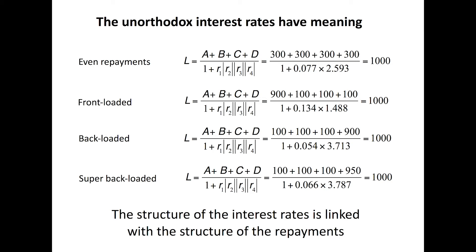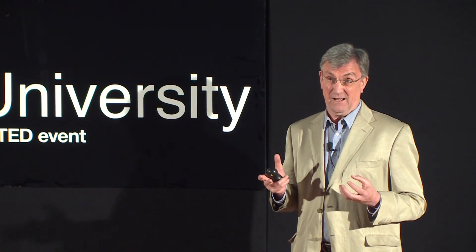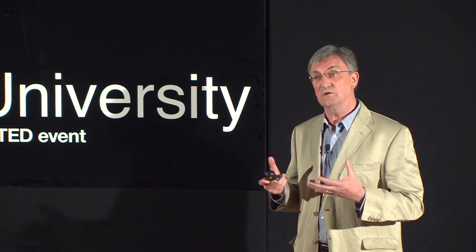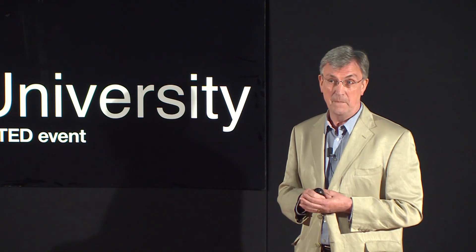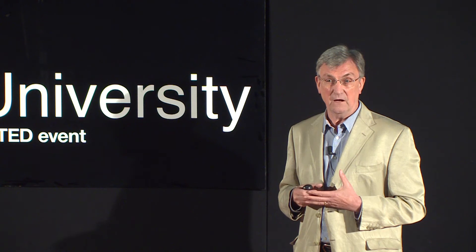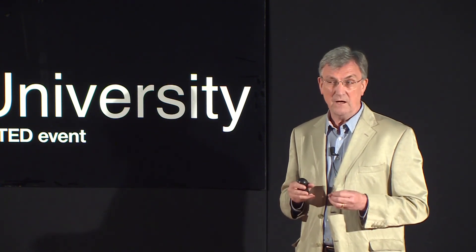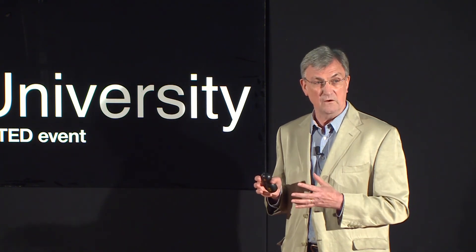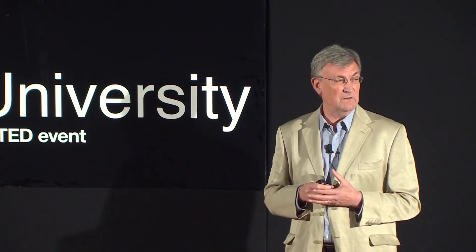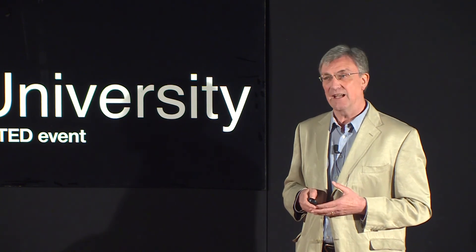Finally, consider a super backloaded loan. Compare the top line with the bottom line very carefully: going from even repayments to a super backloaded loan, the bank is actually taking more from you — there's an extra £50 in the final repayment. But look at what happens to the APR, the conventional one the law tells us to compare: it has actually gone down from 7.7% to 6.6%. So if you're a financial organisation forced by legislation to disclose the APR, and you know consumers go for the lowest APR, the best thing for you to do is to create backloaded products — and that is exactly what they've done.